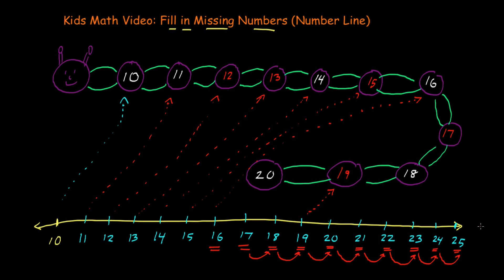But for this problem, we could have stopped earlier — we could have stopped right here at 20, because that would have given us all the information we needed to complete the problem. We did some extra just for fun, and it helped us better understand the number line. We went to 25 just for fun, to practice knowing our numbers.